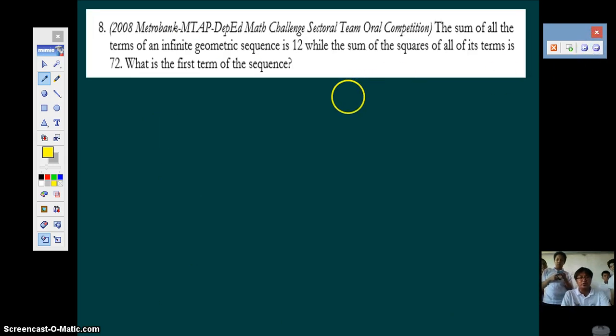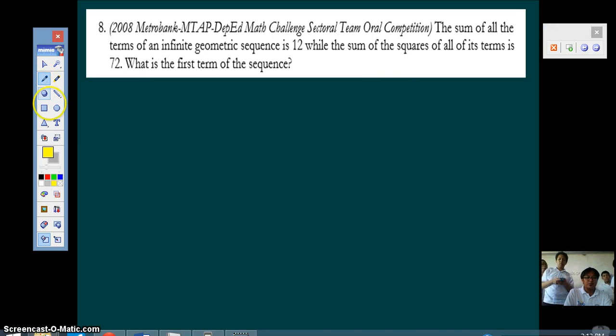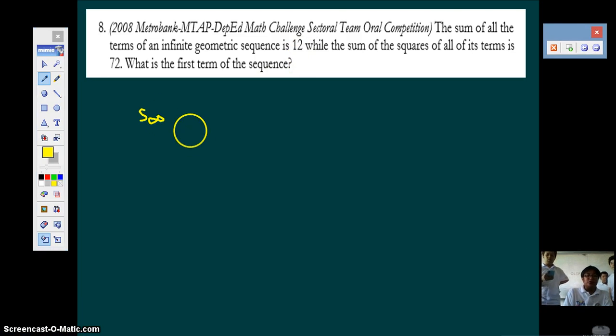Move to the next, the last question for this. The sum of all the terms of an infinite geometric sequence is 12. So we have the sum of an infinite geometric series is 12. So you know it's equal to the first term divided by 1 minus the common ratio, and it's equal to 12.